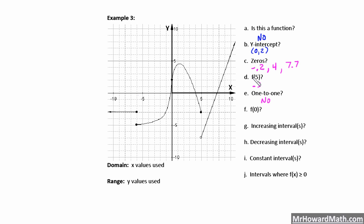Next, f(0): when x is equal to 0, what is y? That's right here at 2, so f(0) equals 2. Increasing intervals: where is this graph increasing? It's increasing in more than one place — right through here and also here.